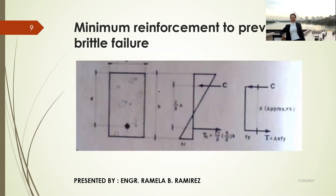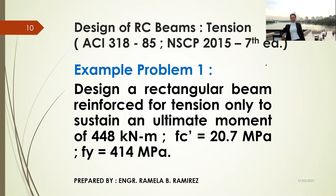This is the diagram for minimum reinforcement to prevent brittle failure, showing the width B, the effective depth, and the area of reinforcing steel bars. We approximate a value for D, and again, tension should be equal to compression: C equals T. We will discuss the example problem in our next blog. See you all — thank you for listening.